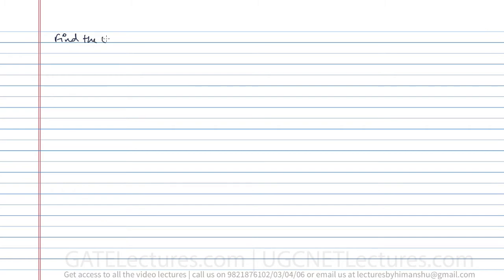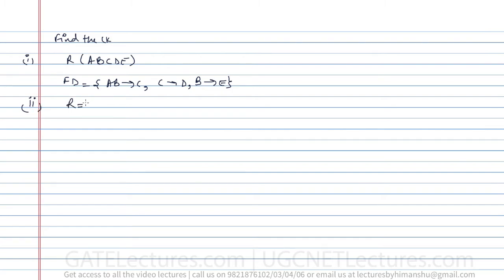Now let us take these examples. The question is: find the candidate keys in these relations. Question one: we have the relation R(A,B,C,D,E) and the functional dependencies are AB→C, C→D, and B→E. Question two: the relation is R(A,B,C,D,E) and the functional dependencies are AB→C, C→D, B→EA.